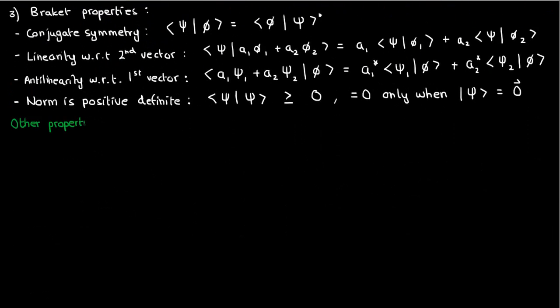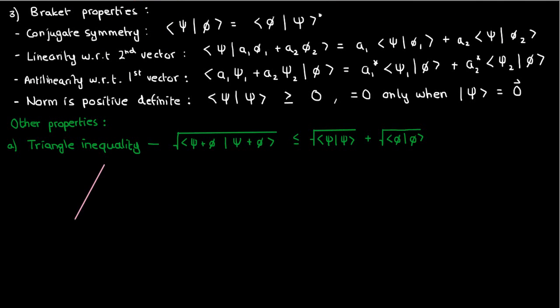There are a couple of other properties that can be proven from the definition of norms and inner products, and these are the triangle inequality, which just says the magnitude of the sum of two vectors is less than or equal to the sum of the magnitudes of the individual vectors. This is just like saying that the sum of the lengths of the sides of a triangle is greater than the length of the third side. Note that the equality in the triangle inequality will only apply if the vectors are linearly dependent, which in real space just means they're on the same line.